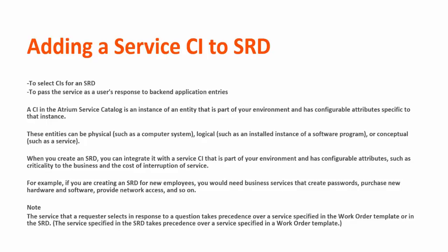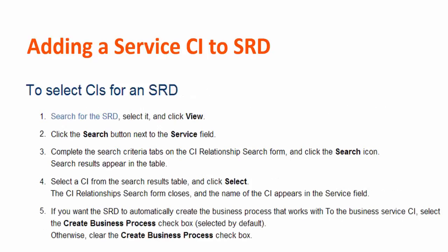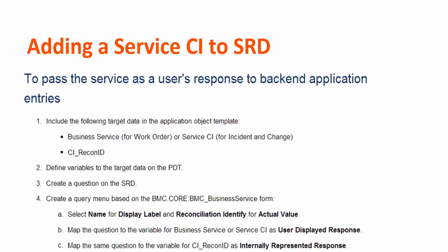You can select the CI for SRD and you can pass the service as a user's response to a backend application entry. To select a CI for an SRD, open your SRD and click on the search button next to the service field, select the CI and click on save.